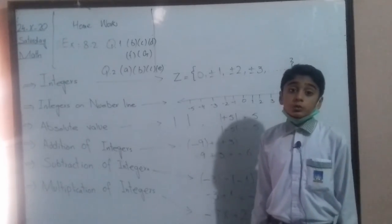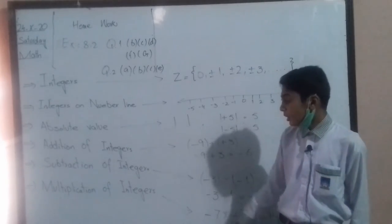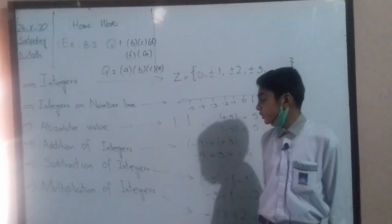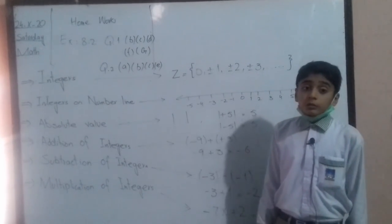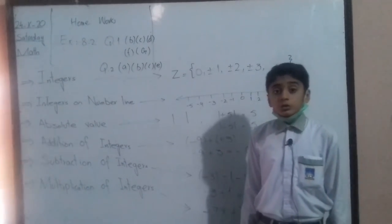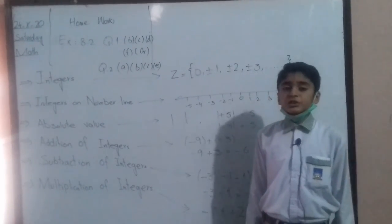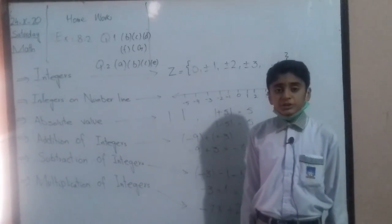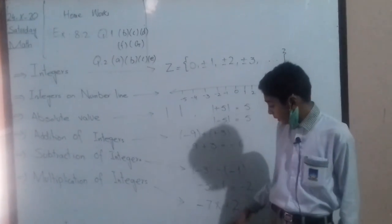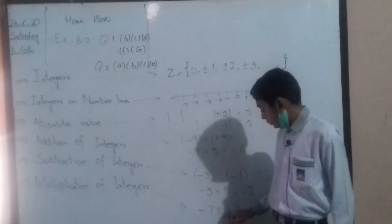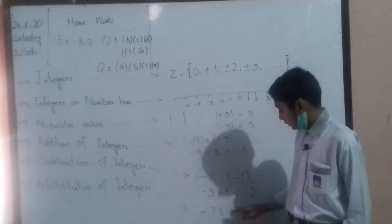Multiplication of integers. We use the sign of multiply between two integers, which is called multiplication of integers. For example, -7 multiplied by +2 equals -14.